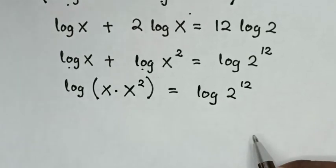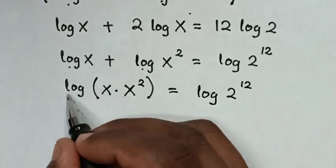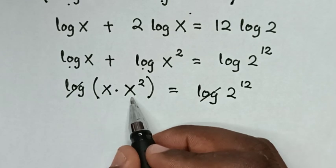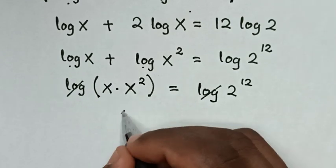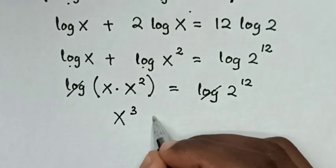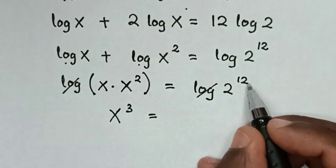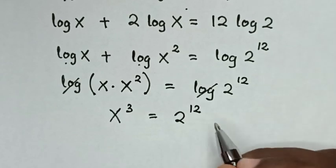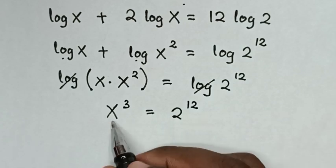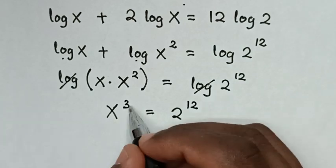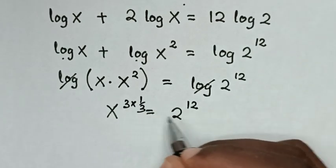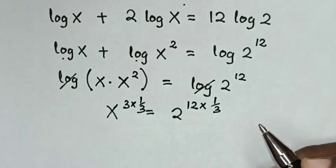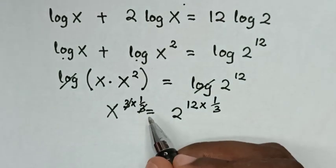In the next step, this log and this log will cancel each other. So x times x squared is x power of 3, is equal to 2 power of 12. Then to find the value of x, we multiply by the power of 1 over 3 on both sides, so the 3 and the 3 will cancel.